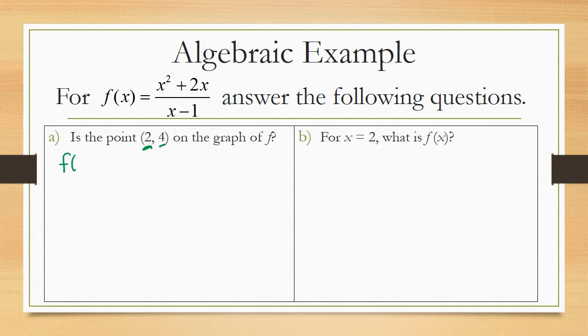So let's see what happens when I substitute 2 in for x. I get f of 2 equals 2 squared plus 2 times 2 all over 2 minus 1. When I simplify that, that gives me 4 plus 4 all over 1, which is 8.